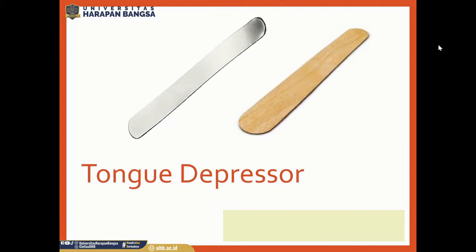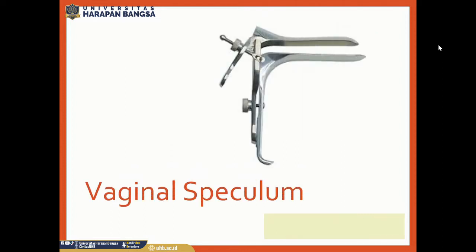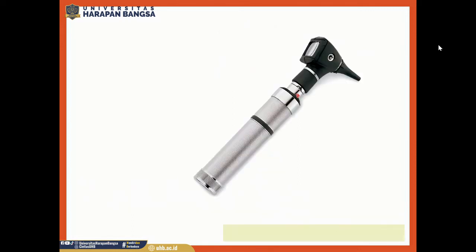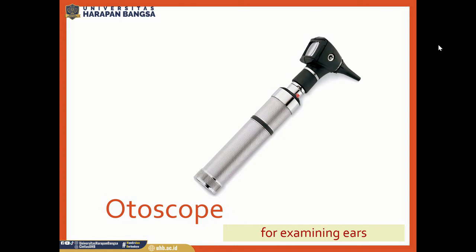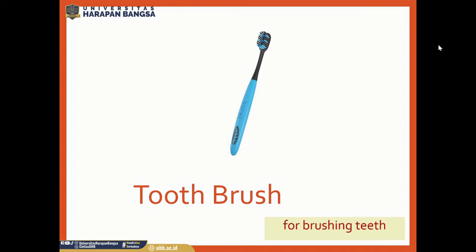This is a tongue depressor. Tongue depressor is for pressing the tongue during oral examination. This is a vaginal speculum. Vaginal speculum is for dilating the vagina. This is an otoscope. Otoscope is for examining ears. This is a toothbrush. Toothbrush is for brushing teeth.